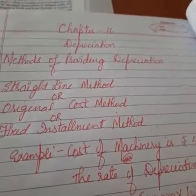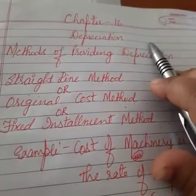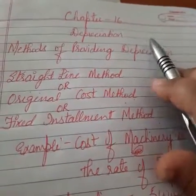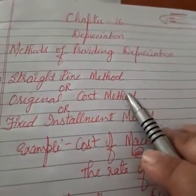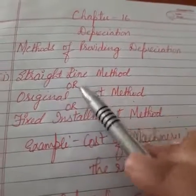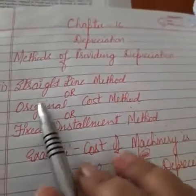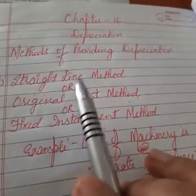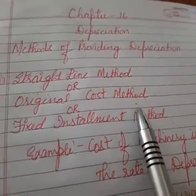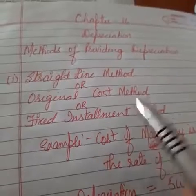In today's video we will discuss methods of providing depreciation. Let's get started with our very first method — the straight line method. Now, why is this also called the original cost method and the fixed installment method? I'll explain.